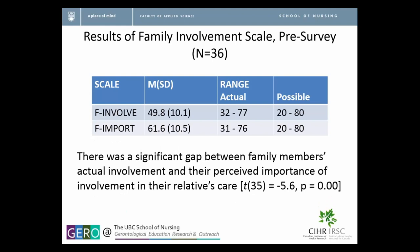The results of the scale for our study facility showed a significant difference between what families were currently experiencing and what was important to them. The average score for what's currently happening was 49.8, and for what was important to them it was 61.6, with the highest possible score being 80. This significant gap means the facility can look at those statements individually and as a group, and think about practical ways to improve care to make that gap smaller.